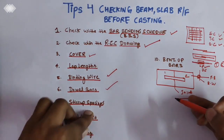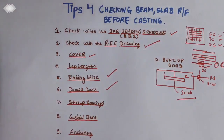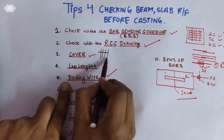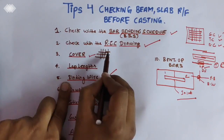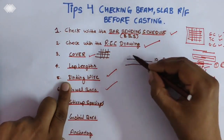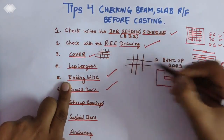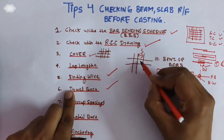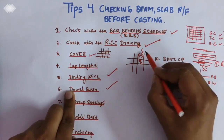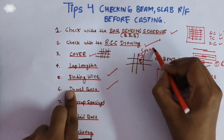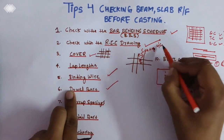The seventh tip is the spacing. For example, the main bars and distribution bars we provide — these are the main bars and these are the distribution bars. The spacing between the two matters. What is the spacing between the main bars, and what is the spacing between the distribution bars? This spacing is measured center to center.